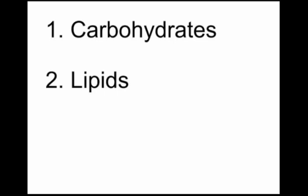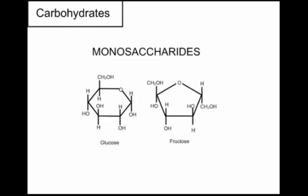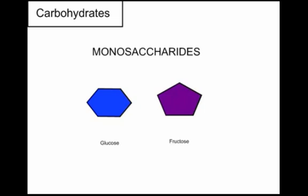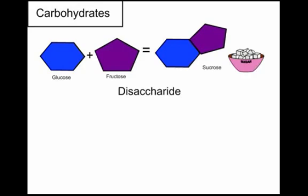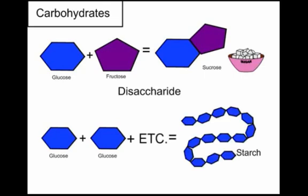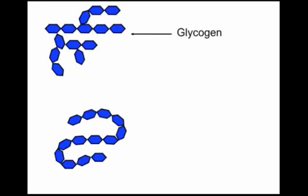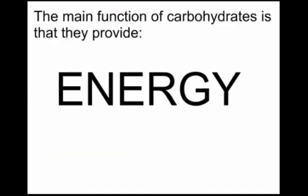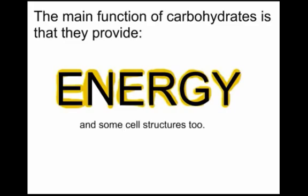The first polymer, carbohydrates, are made of small molecules called monosaccharides, which are simple sugars such as glucose and fructose. These can be linked to form polymers such as sucrose, or table sugar — since only two are linked, it's a disaccharide. Many monosaccharides put together, like chains of glucose forming starch in plants, create a polysaccharide. When glucoses are branched, it's called glycogen, which the body stores in the liver. Other glucose chains form cellulose in plants, also known as fiber, which humans cannot digest. Fiber helps food move through the digestive system and can lower cholesterol. The main function of carbohydrates is to provide the body with energy and help make some cell parts.